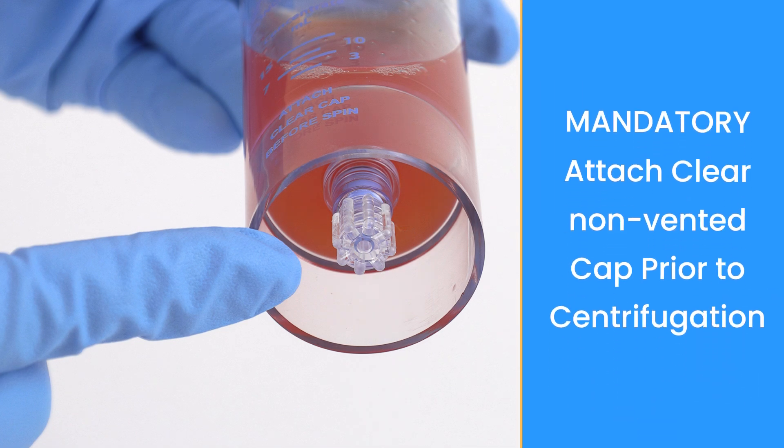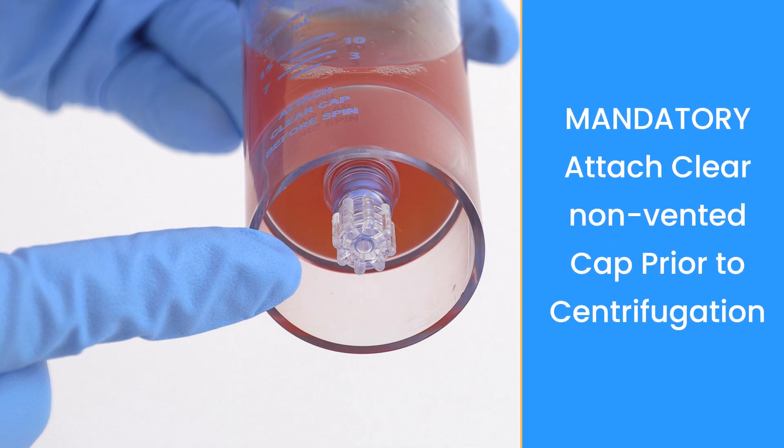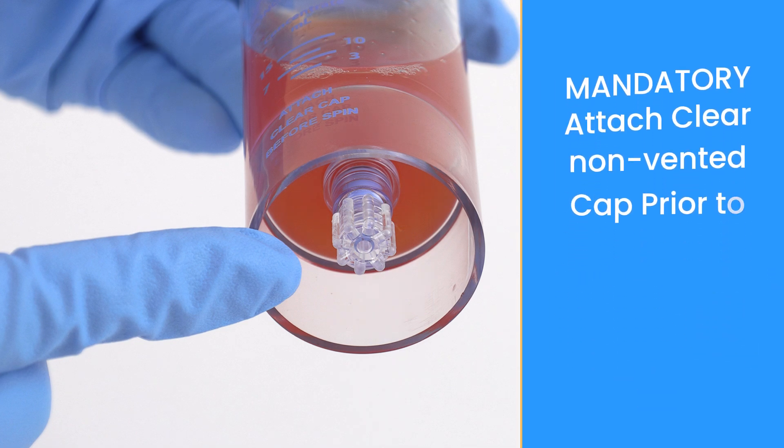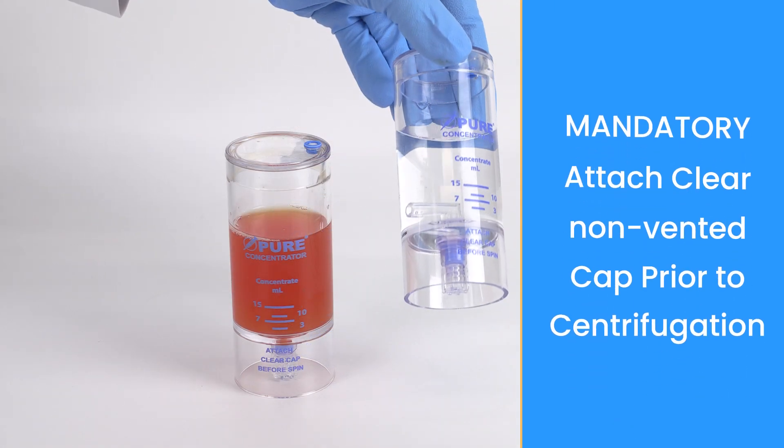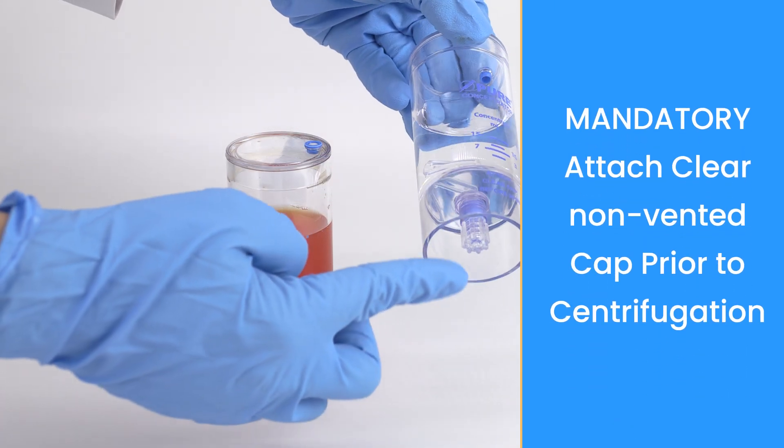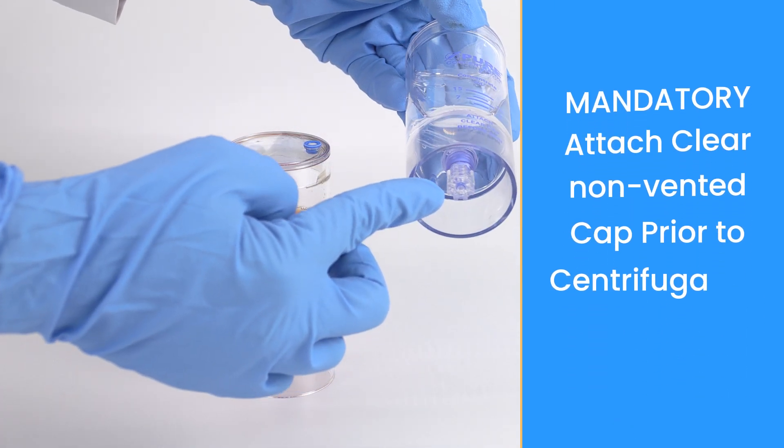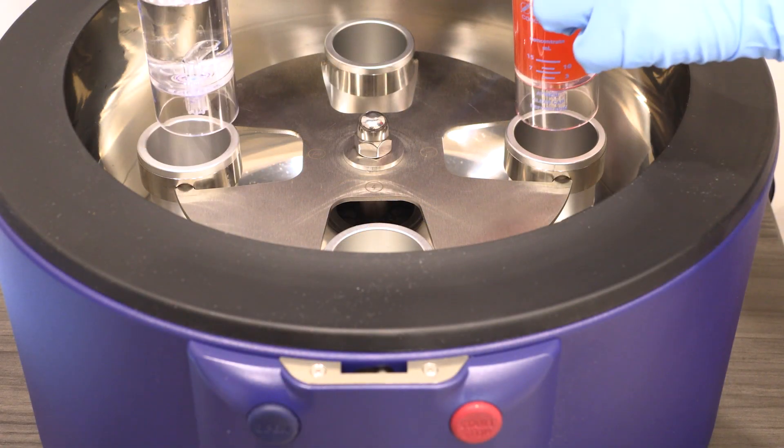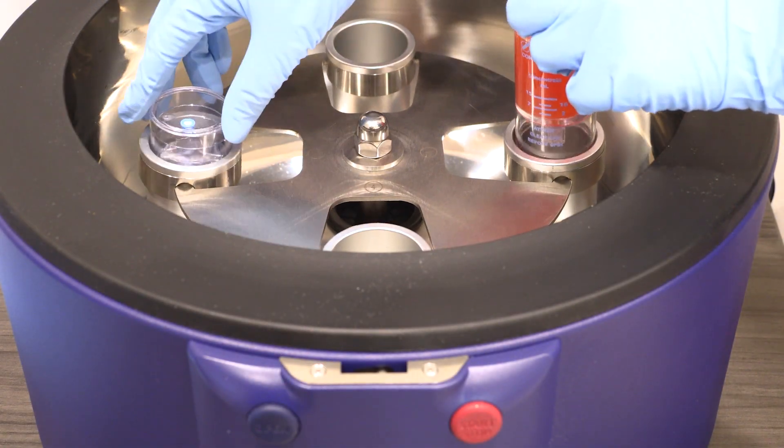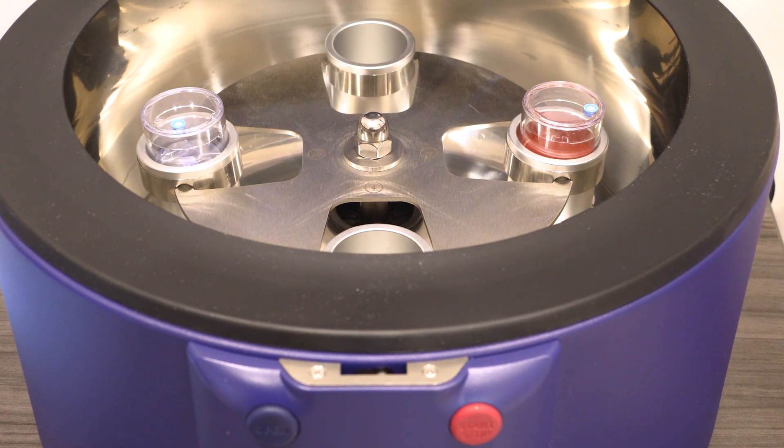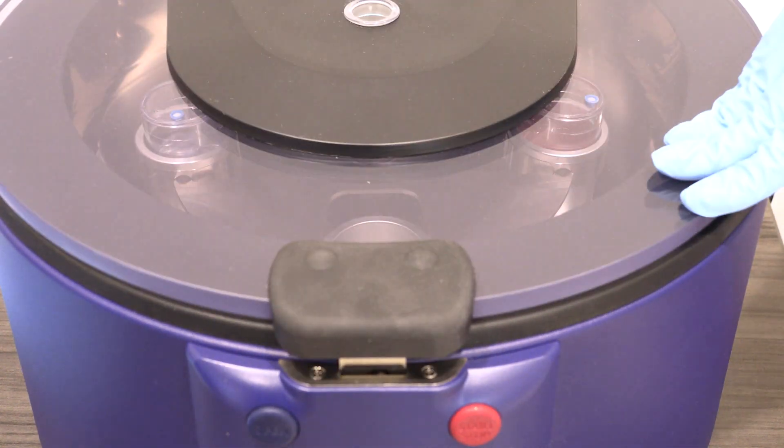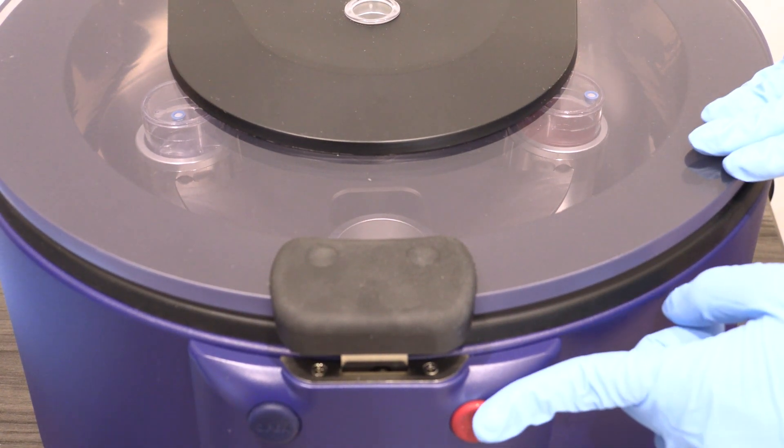Be sure to place the non-vented cap on the bottom port prior to centrifugation. Counterbalance the concentrator device with equal volume and place back into the centrifuge rotor at opposite ends. Follow the protocol settings provided in the Pure2 IFU insert. Close the centrifuge lid and press start.